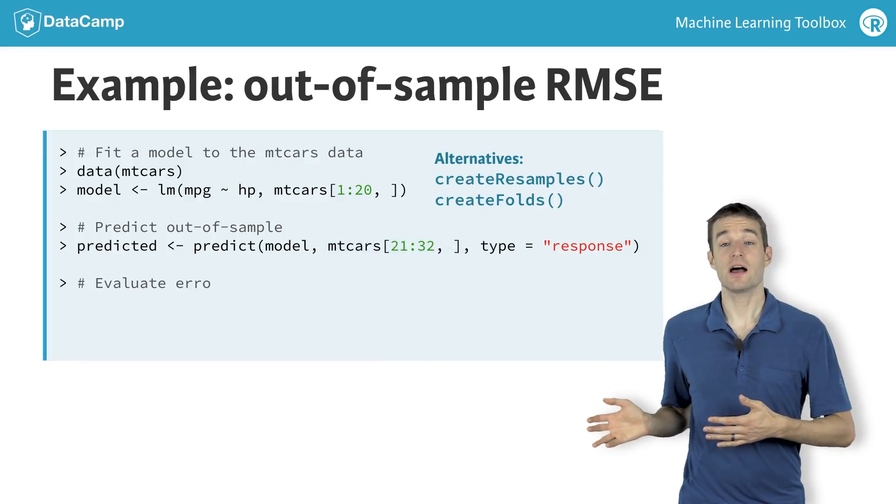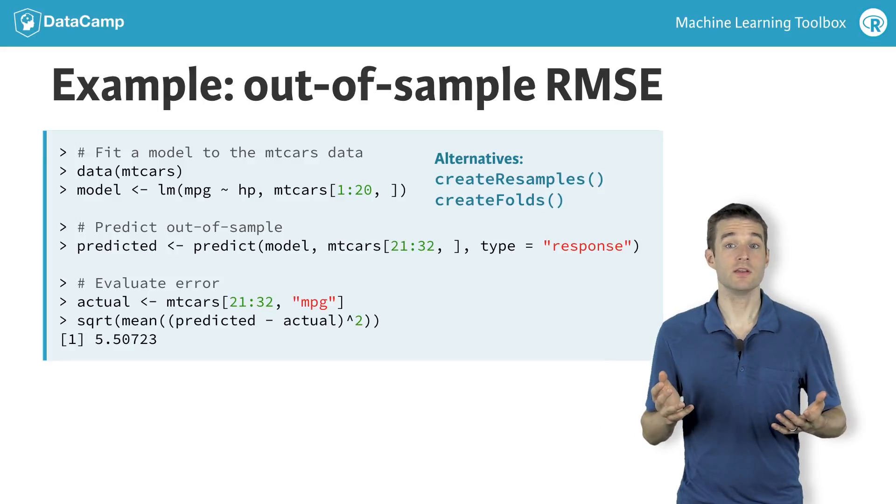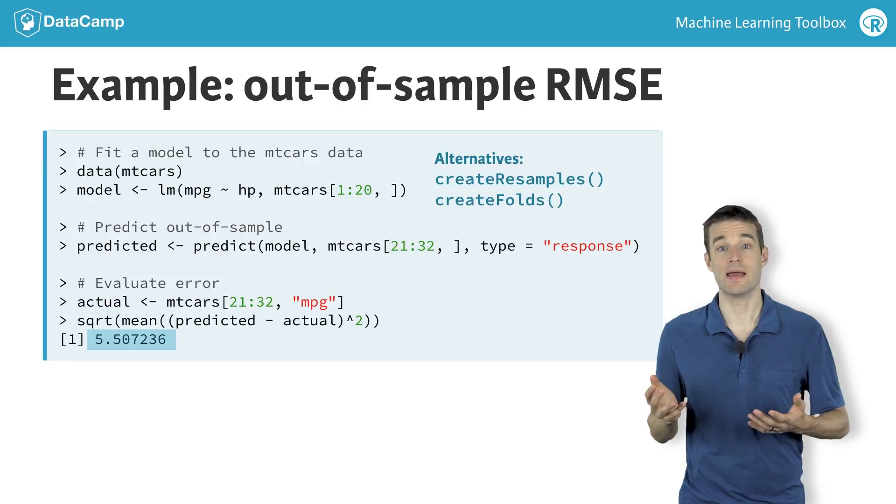Finally, we calculate root mean squared error, or RMSE, on the test set by comparing the predictions from our model to the actual MPG values for the test set. RMSE is a measure of the model's average error. It has the same units as the test set, so this means our model is off by 5 or 6 miles per gallon on average.